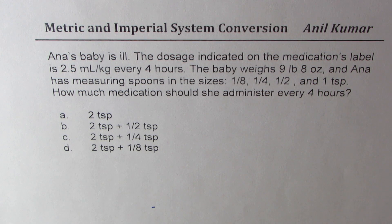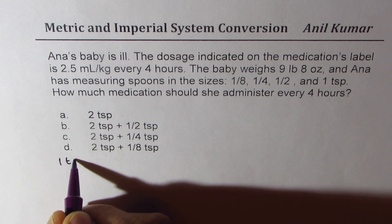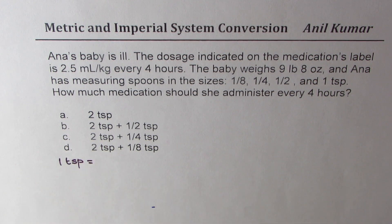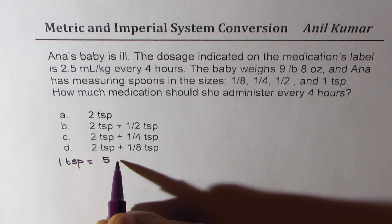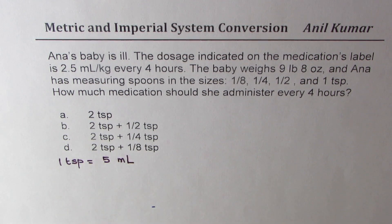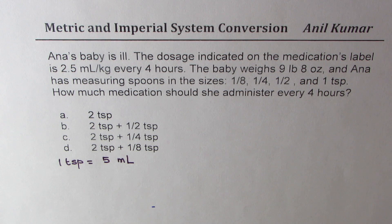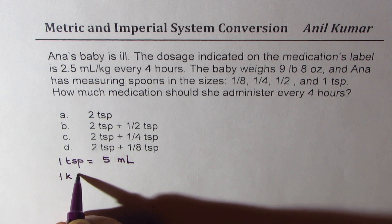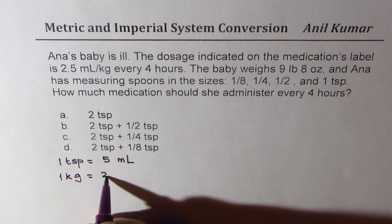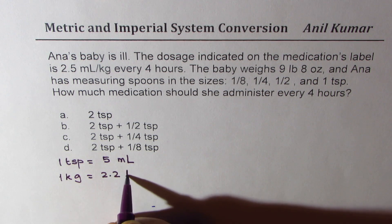Now let's look into some very useful units. What is 1 teaspoon equal to? As far as milliliters are concerned, 1 teaspoon is 5 milliliters — that is one conversion we need. We are given weight in pounds, so we also need the conversion of kilograms to pounds. We know that 1 kg is approximately equal to 2.2 pounds.